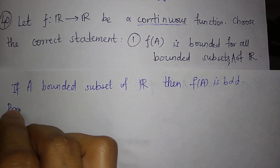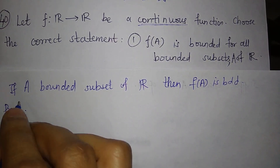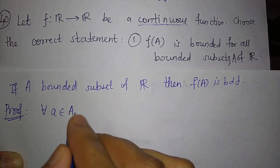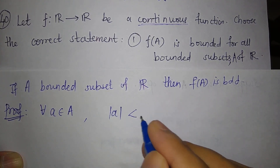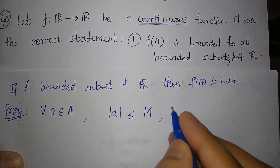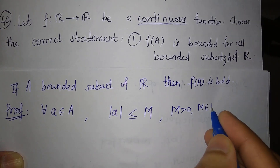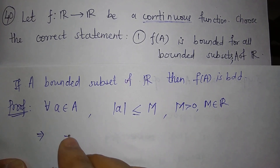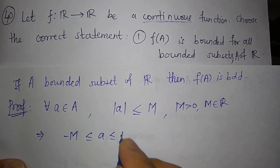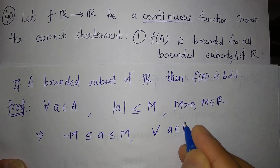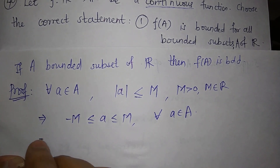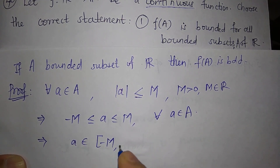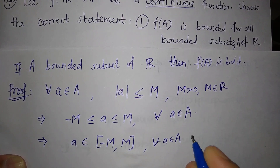Let us prove this. Since A is bounded, for all a belonging to A we have |a| ≤ M for some positive real number M. This is the definition of a bounded set. This gives us −M ≤ a ≤ M for all a in A. That means A is a subset of the interval [−M, M].